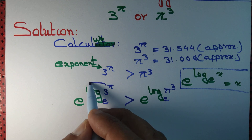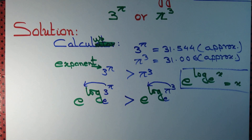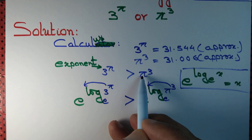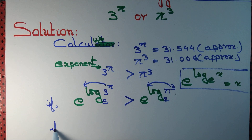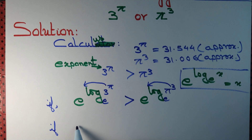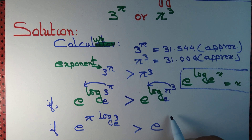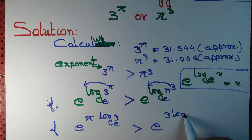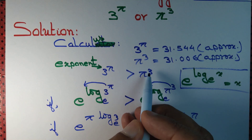Now, powers can be taken out of the logarithm. Since those two numbers are equal, this inequality is true if — further applying that rule — e to the power (pi times log 3) is greater than e to the power (3 times log pi). If this is true, then 3 to the power pi is greater than pi cubed.